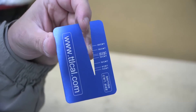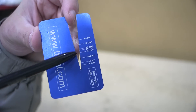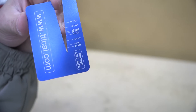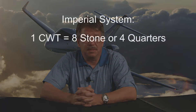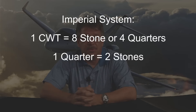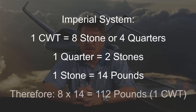In the U.S. weights and measurement system, 100 pounds would be a 100 weight. But in the UK imperial weight and measurements, it is equal to 112 pounds. The reason is this: the imperial system utilizes the stone as a measurement of weight. In the imperial system, a 100 weight is equal to 8 stones or 4 quarters. 1 quarter is equal to 2 stones, and 1 stone is equal to 14 pounds. Therefore, 8 times 14 equals 112 pounds, or 100 weight.